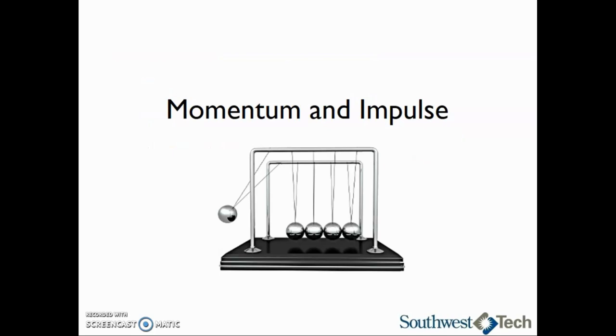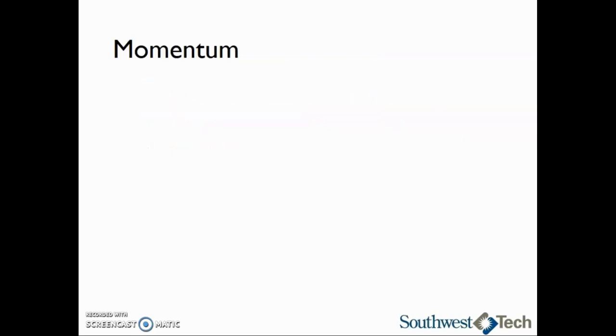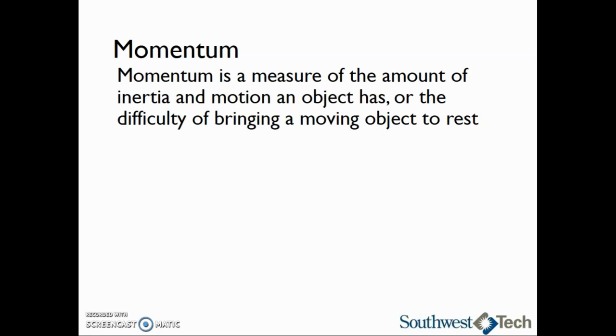The first topic we are going to take a look at is momentum and impulse. Momentum is a measure of the amount of inertia and motion an object has. It can also be thought of as the difficulty of bringing a moving object to rest.